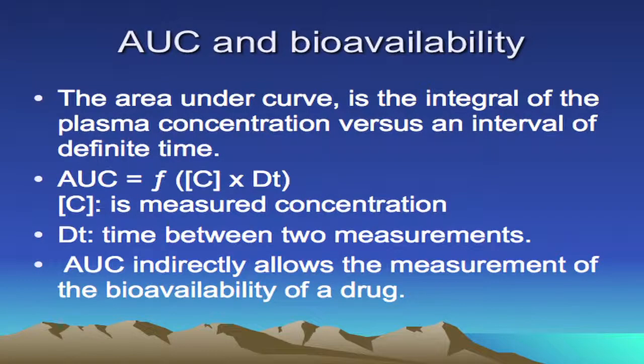The topic I've been commissioned with is regarding how we achieve area under the curve that is satisfactory, and how we maintain this fine balance between keeping the dose fairly reasonable while managing to maintain optimal efficacy and balancing the toxicities. The official definition of area under the curve is the integral of the plasma concentration of the agent versus an interval of definite time.